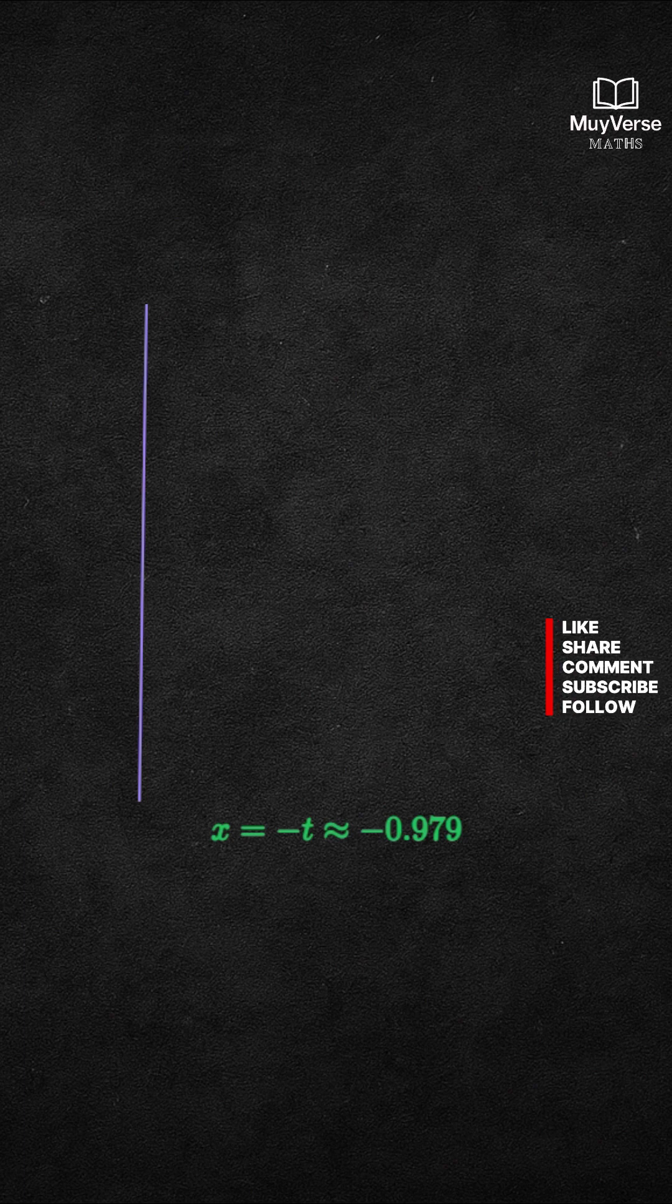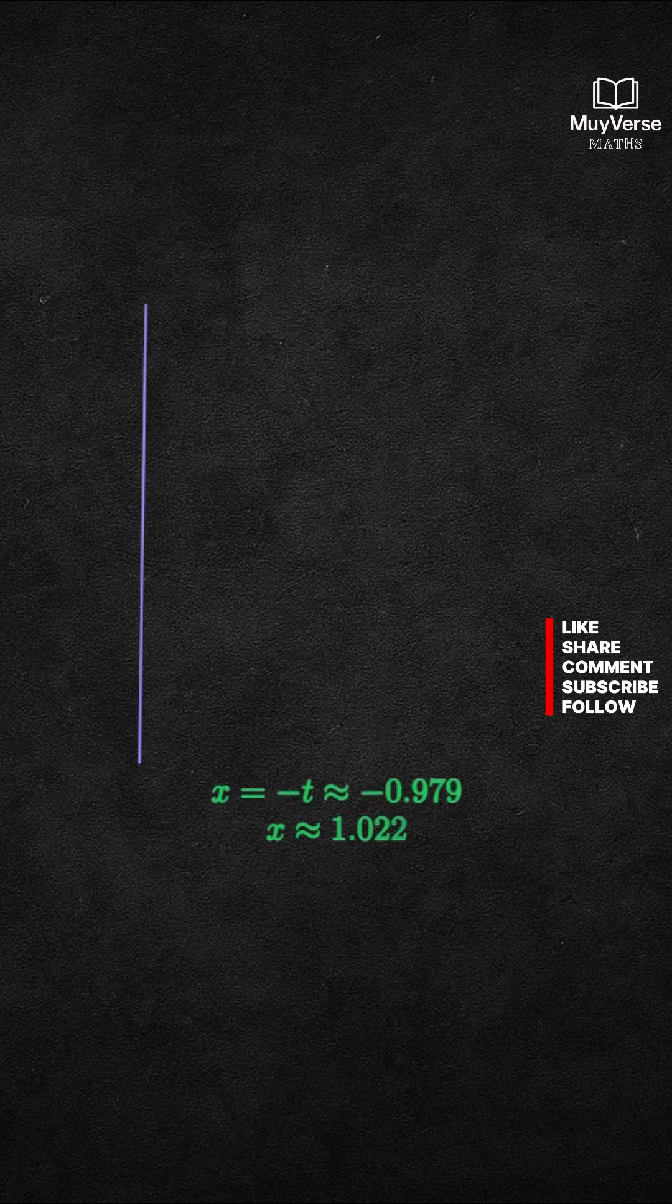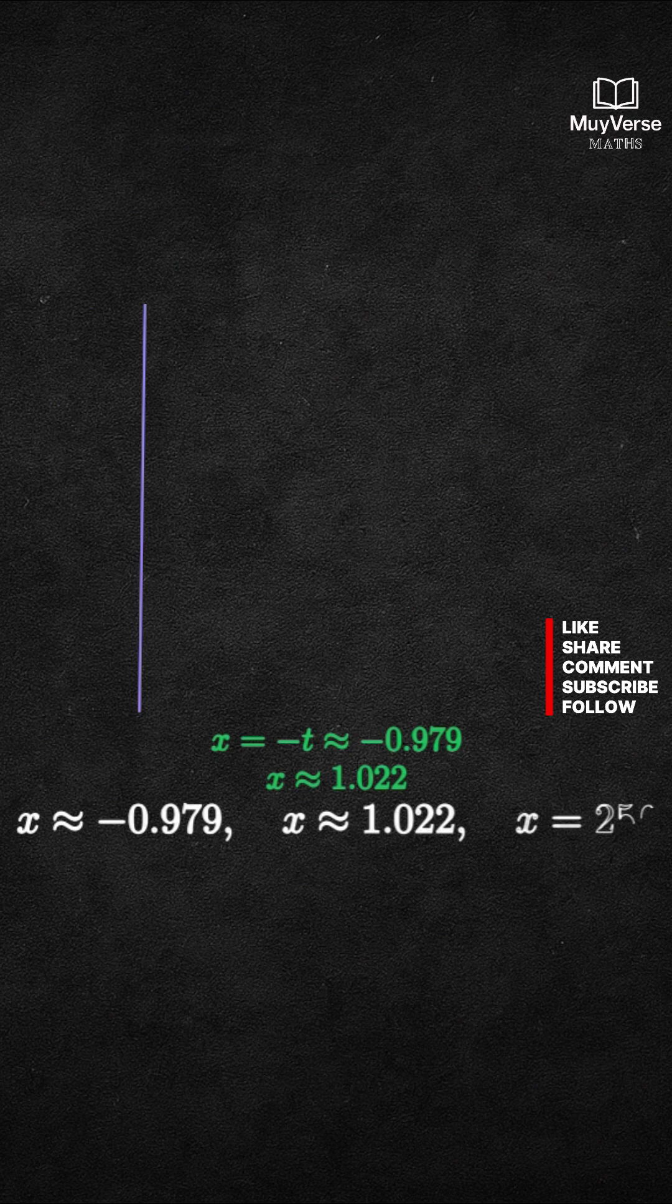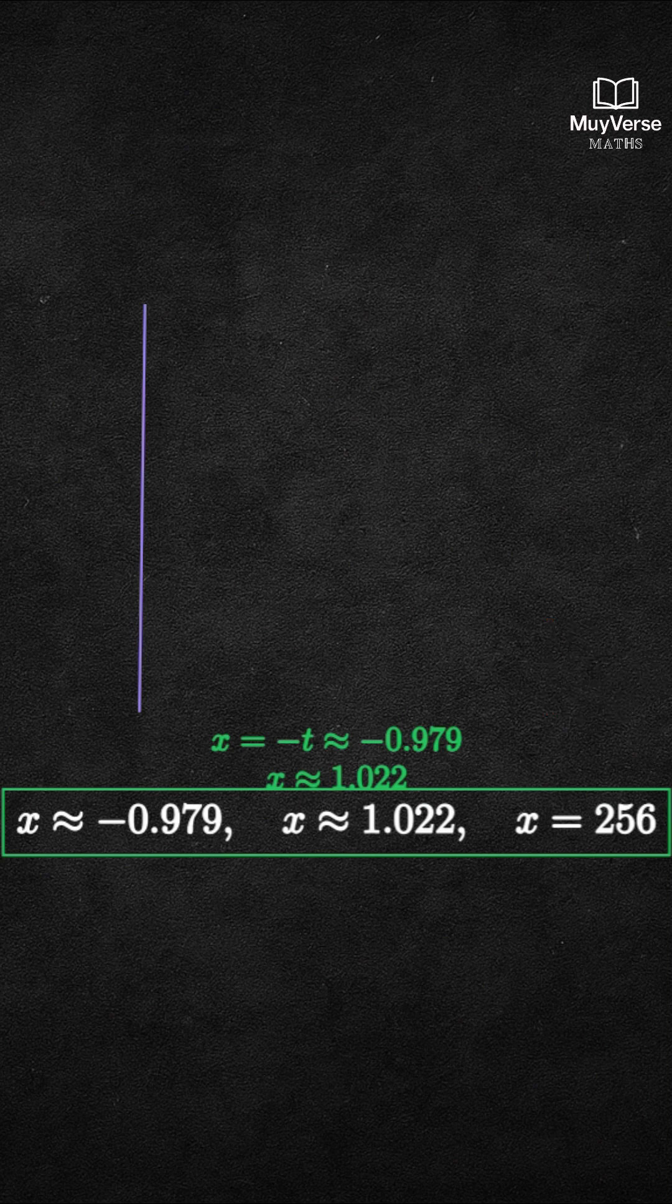Step 6. Read off the small positive solution from our earlier graph. x is approximately 1.022. Final answer. There are three real solutions: x approximately negative 0.979, x approximately 1.022, and x equals 256 exactly.